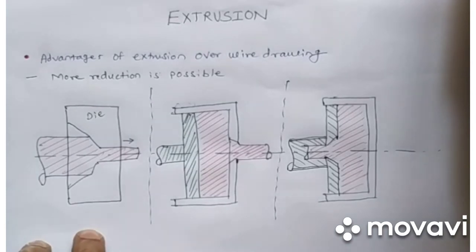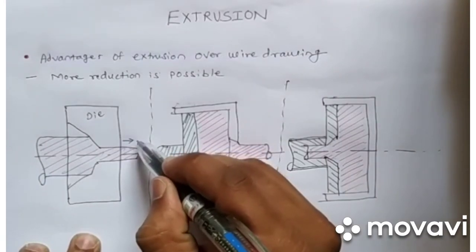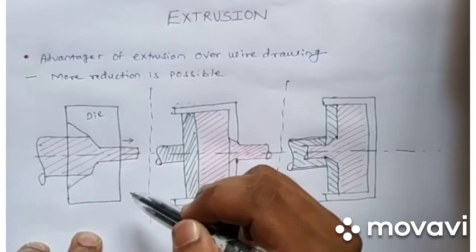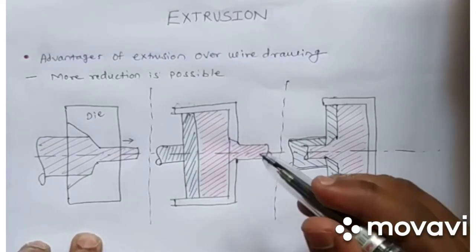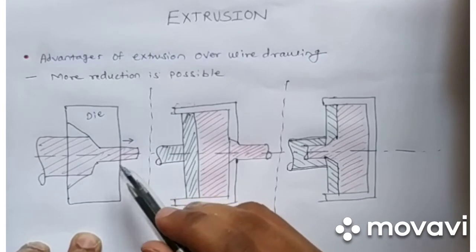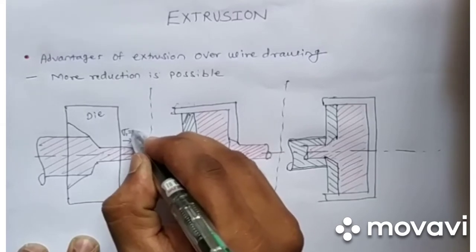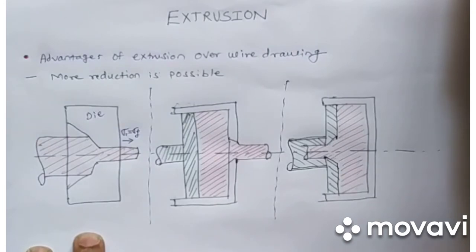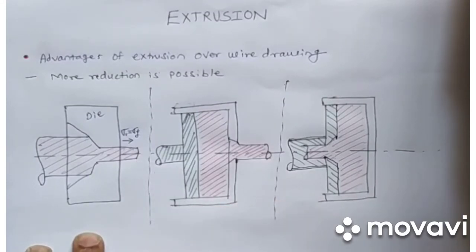Now we have seen the limitation of wire drawing. When we apply a pulling force, the stress cannot be greater than the yield strength of the material. This limits the wire drawing process, and the maximum possible reduction is limited by this condition — sigma 1 maximum possible value will be sigma y. We cannot go further because the rod would deform and lose a uniform cross-section.